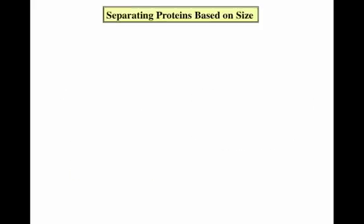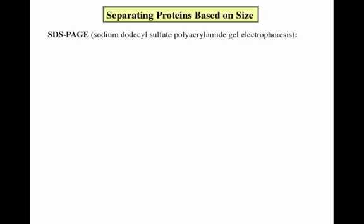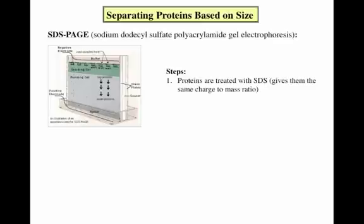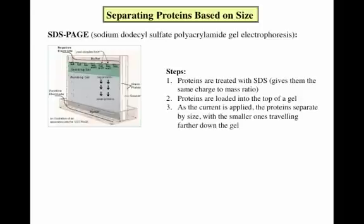Size is another factor that can be used to separate proteins. This is done through SDS-PAGE, which stands for Sodium Dodecyl Sulfate Polyacrylamide Gel Electrophoresis. Essentially, proteins are run through a gel, which acts like a sieve, allowing small proteins to travel through faster while larger ones take longer. The first step is to treat all the proteins with Sodium Dodecyl Sulfate, which denatures them to their primary structures and coats the outsides with negative charges, giving all proteins roughly the same charge-to-mass ratio so that separation will be based on size. The protein samples are then loaded into the wells of a polyacrylamide gel, a current is applied, and because all the proteins are negatively charged, they travel down the gel from the negative end to the positive end, separating based on their sizes.